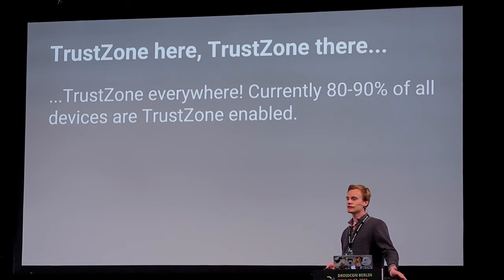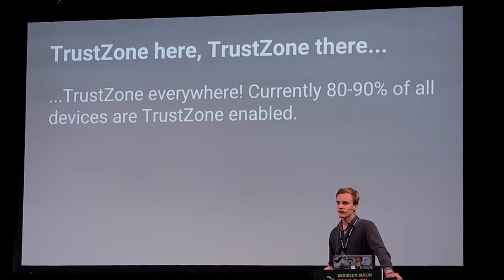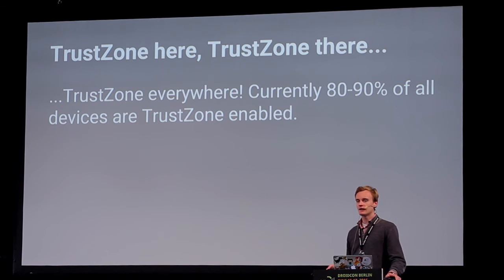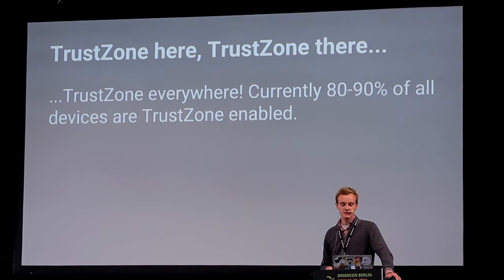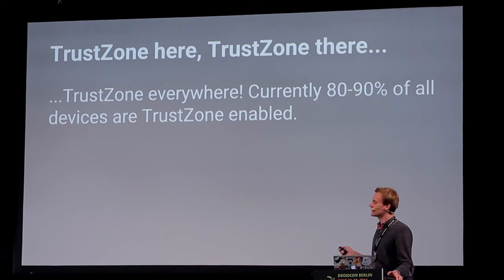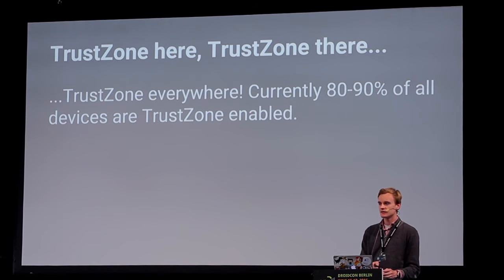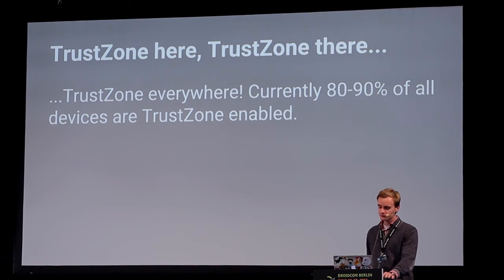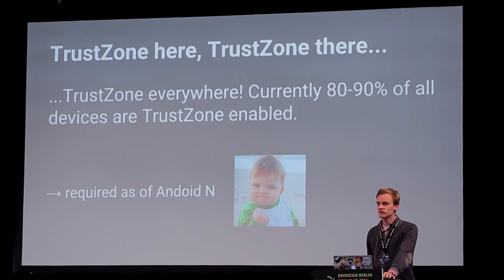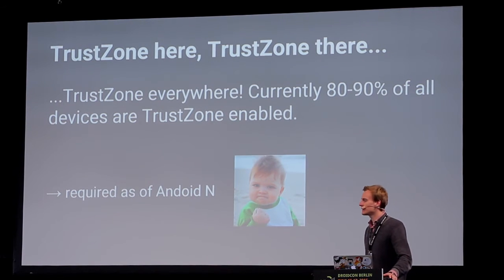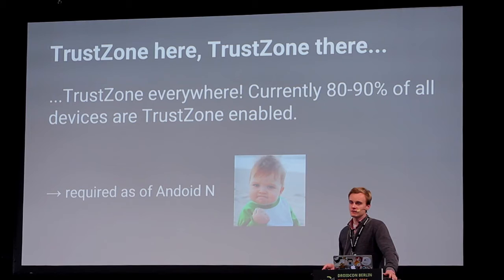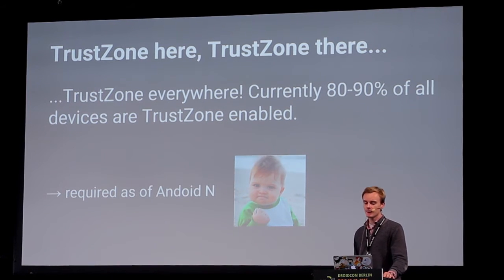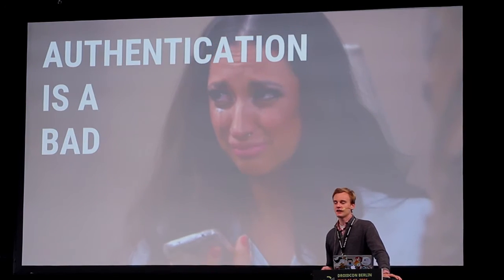Currently 80 to 90 percent of all devices already have a trusted execution environment — Qualcomm calls it TrustZone. It's used for digital rights management. The cool thing is that a TrustZone-enabled CPU is a requirement of Android M, so every device shipped with Android M has it enabled. You can store all your key material securely inside it. But we all know authentication is a bad user experience.